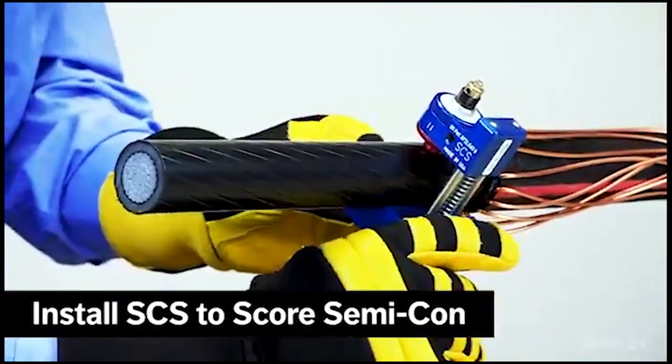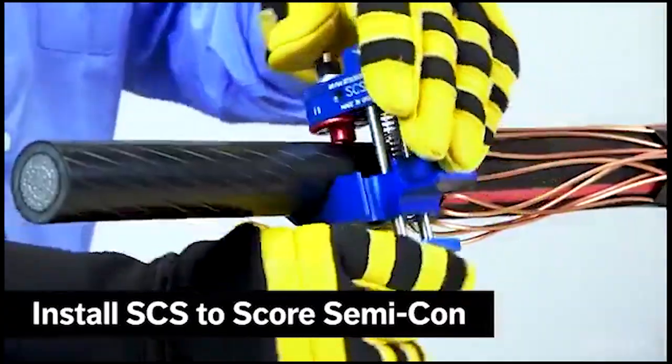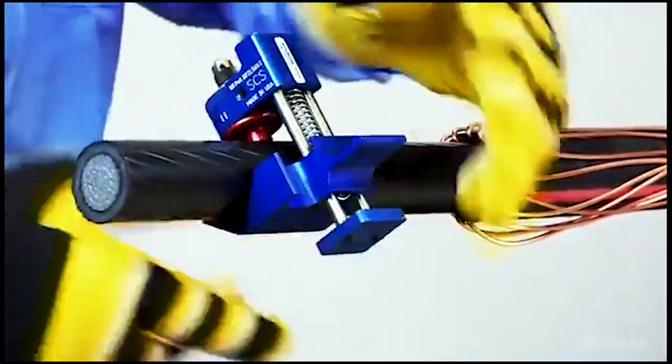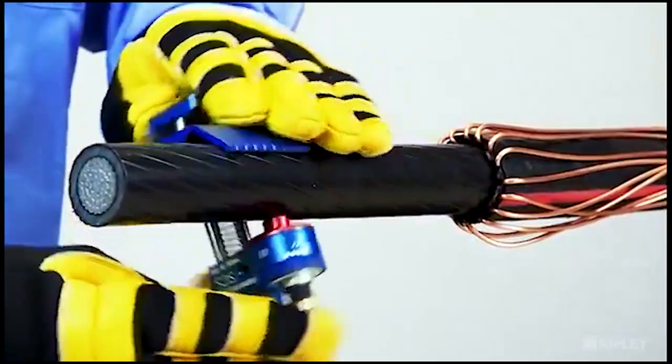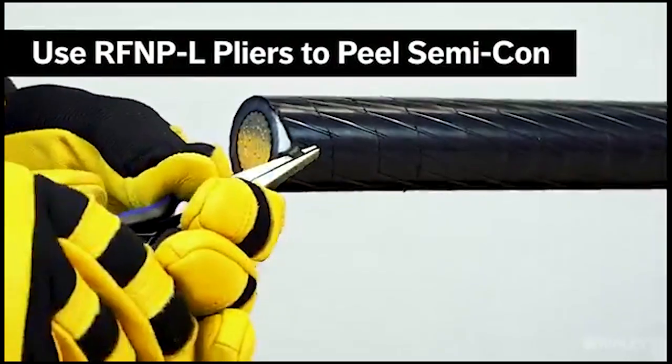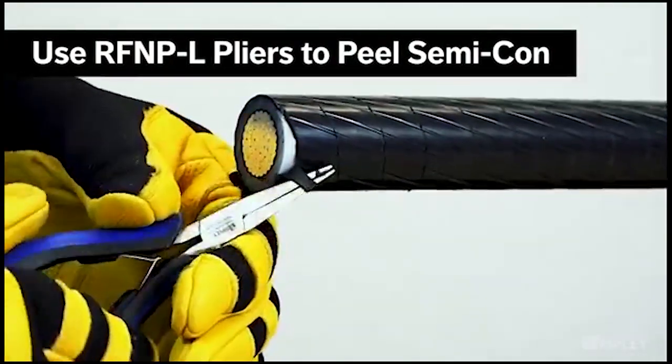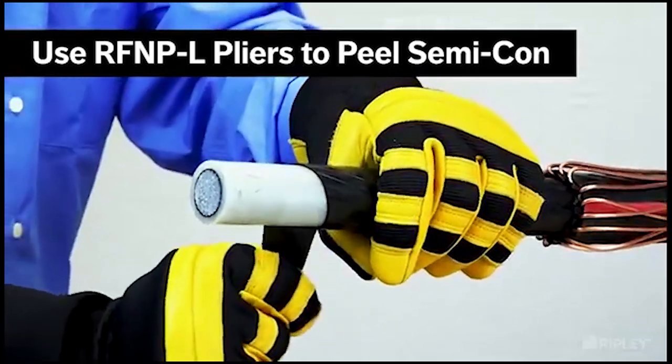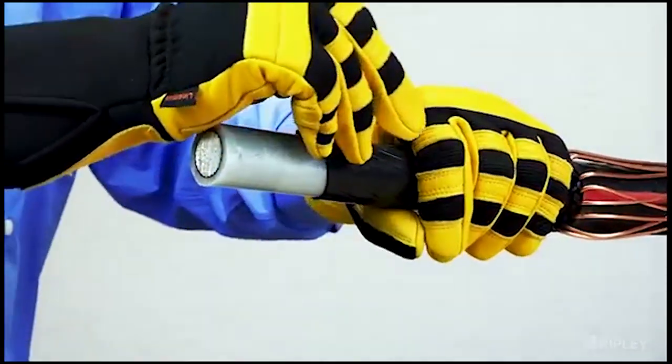Install a semi-con scoring tool such as the SCS onto the cable to score the semi-con layer. Use a pair of flat nose pliers such as the RFN-P-L to begin peeling away the semi-con and exposing the insulation.